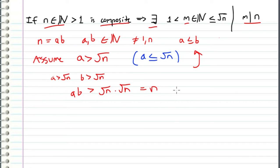So we've come to the conclusion that ab is greater than n. But originally, we assumed that ab is equal to n. Therefore, this is a contradiction. So we can assume that this is not true, and this is true.